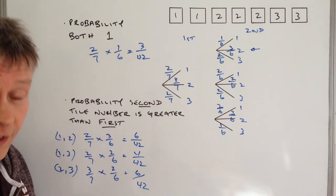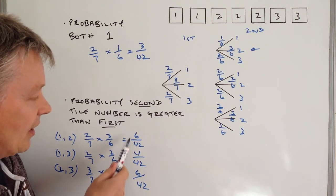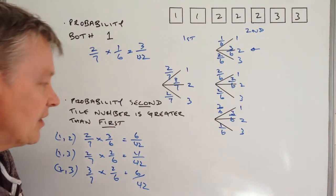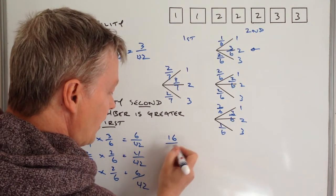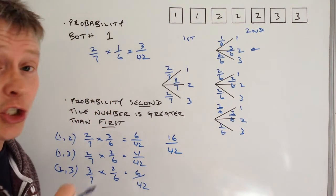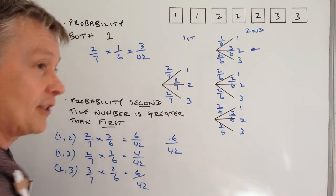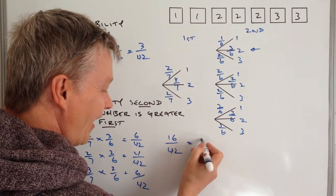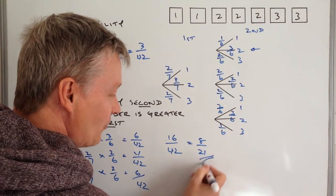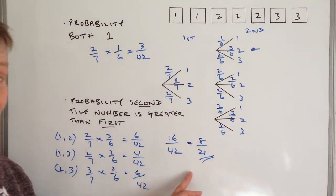And then to work out the overall probability, we simply add them together. So that's going to be six plus four is ten, plus six, so that's going to be 16/42 for the total probability. Or we can actually reduce that, as we should always do with fractions, and we're going to make that 8/21.